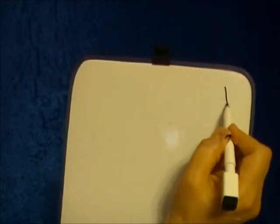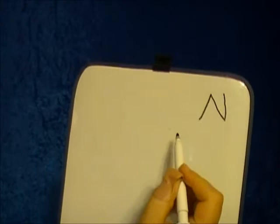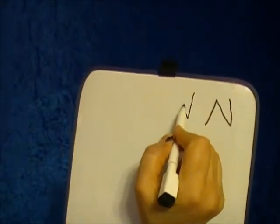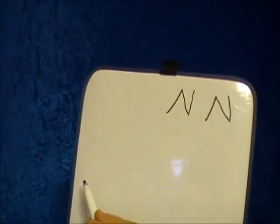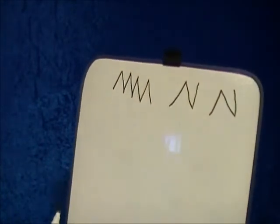We'll take a minute to practice handwriting for the mem. Remember, the mem has two different forms. There's the form which is always used at the beginning or in the middle of a word. We go down, up, down. The root meaning for the letter mem is water, and you can see the water — if you kept going, it would look like water.